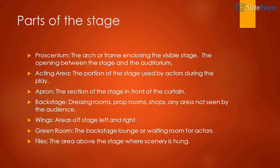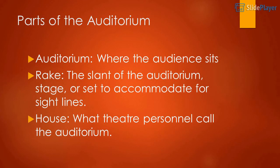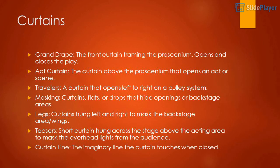Just for good measure, I'm going to show you these terminologies with their definitions so that you can pause this video at any time. The auditorium is where the audience sits — we also call this the house. A rake, which we do not have, is a slant on the stage or in the auditorium, which we do have, in order to accommodate for the sight lines. You'll see right here the definitions for the grand drape, the act curtain, the travelers, any masking — which includes flats and drops — in order to hide backstage. The legs, teaser curtains also known as border curtains, and a curtain line, which is the imaginary line that the curtain touches when it is closed.